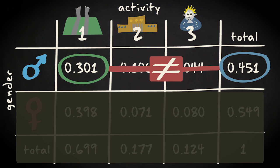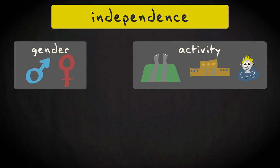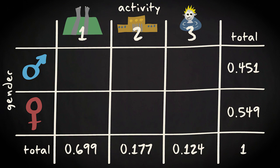We can take a different approach as well to look at independence. If you could assume independence between two variables, gender and activity, you could calculate the joint probabilities by multiplying the marginal probabilities for gender and activity. Let's see whether this would be reasonable in our case.